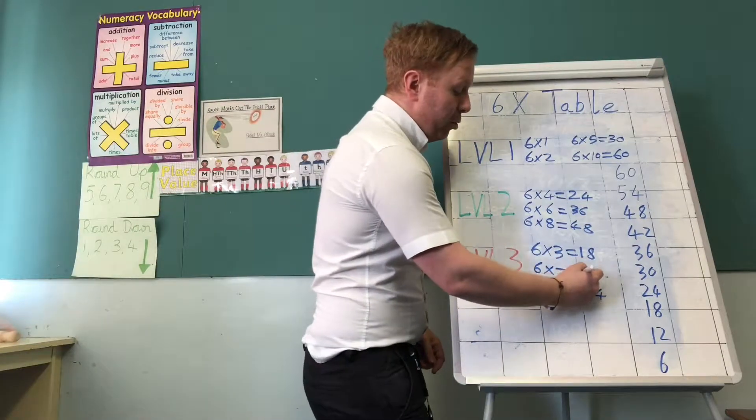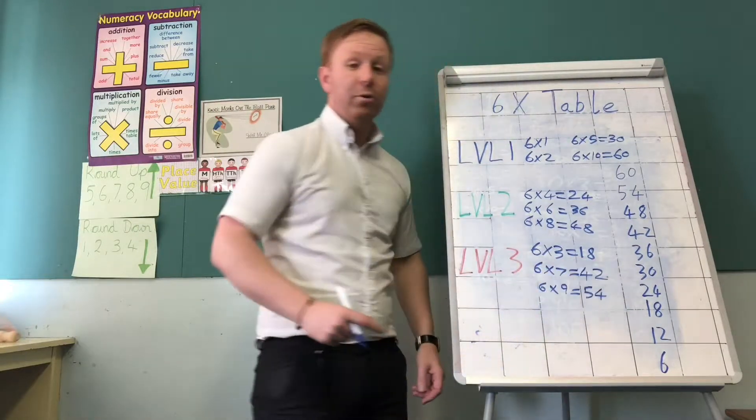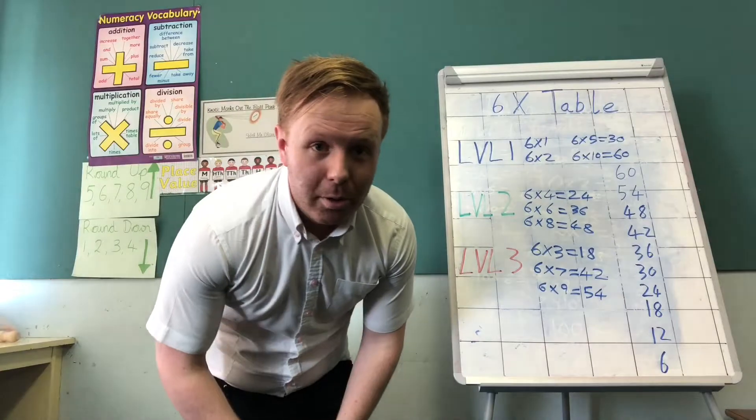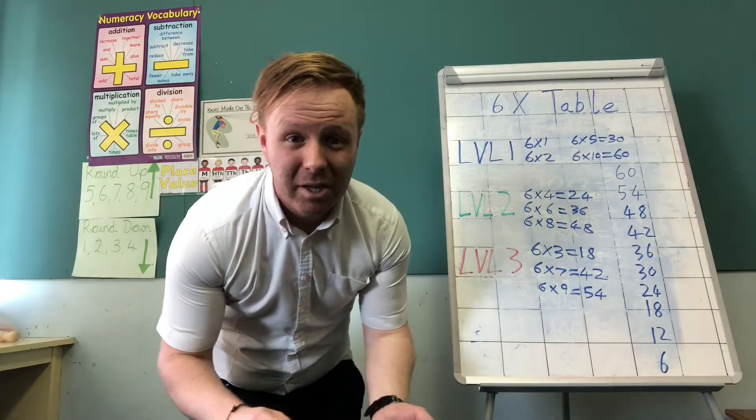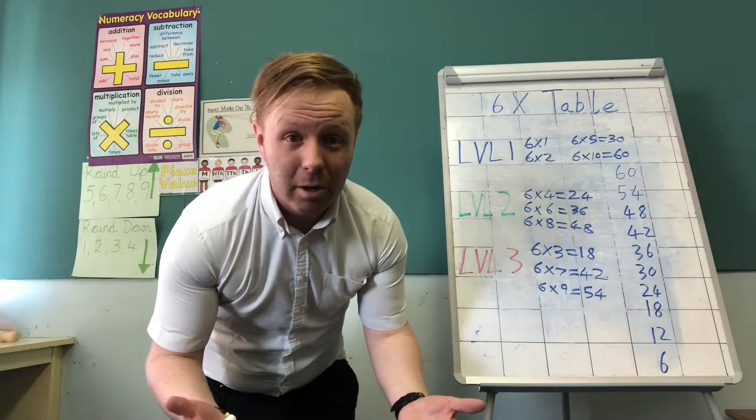My favourite sum in the world. Don't ask me why. It's 42. Just remember that when you're asked 6 times 7 or 7 times 6, it's Mr Clark's favourite.